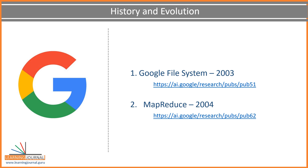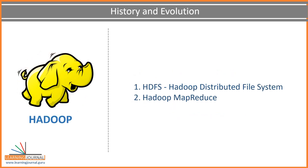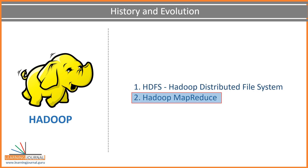They termed the solution the Google File System. The second white paper was published by Google in 2004 and talked about the data processing and transformation problem. They termed it the MapReduce Programming Model. These white papers were well appreciated by the open source community and formed the basis for the design and development of similar open source implementations — Hadoop. The GFS is implemented as the Hadoop Distributed File System, and Google MapReduce is implemented as the Hadoop MapReduce Programming Framework.